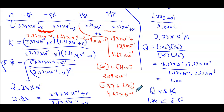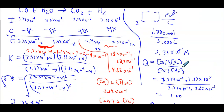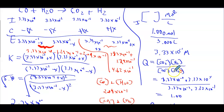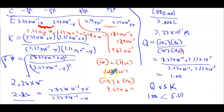So to summarize: the equilibrium concentrations are [CO] = [H₂O] = 2.04×10⁻¹ M, and [CO₂] = [H₂] = 4.62×10⁻¹ M. Now we're done and can report all concentrations.